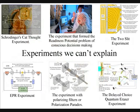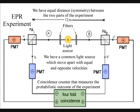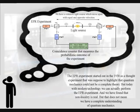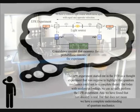The next experiment we will look at is the EPR experiment. What is nice about this experiment is that it started out in the 1930s as a thought experiment that was supposed to highlight that quantum mechanics could not be a complete theory.